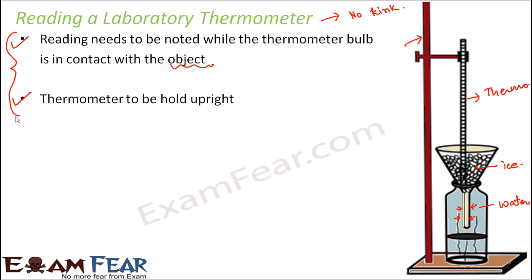Another important point: the bulb should never touch the surface of the container. If the bulb touches the container, the proper heating of the bulb gets disturbed. We want the bulb to be surrounded on all sides by the substance whose temperature needs to be measured — for example, when measuring the temperature of water, the bulb should be completely surrounded by water and must not touch the container walls.